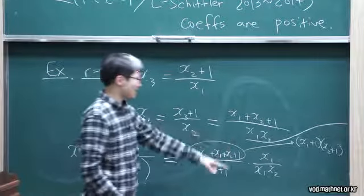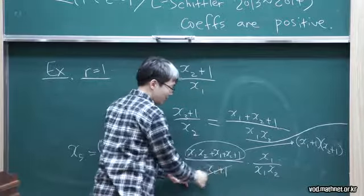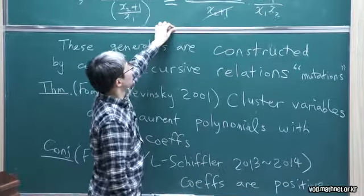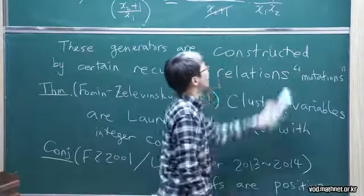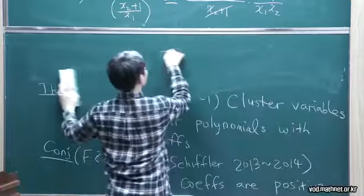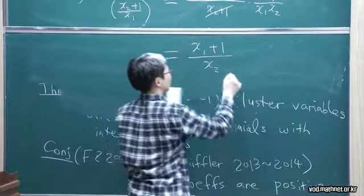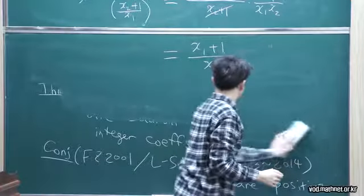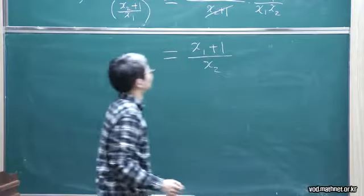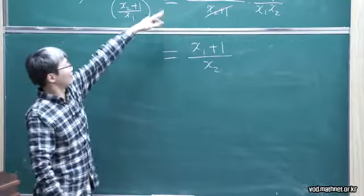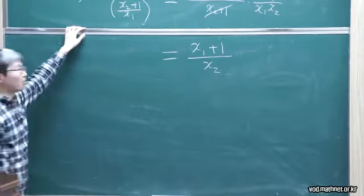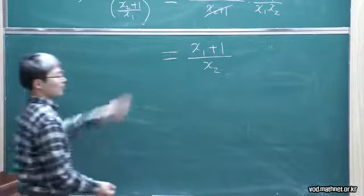And this polynomial becomes factored, and so actually it can be factored like this. And then moreover surprisingly it has a common factor, so there is a cancellation. So once we have such a cancellation, we will get a polynomial, not just a rational function. We will get a Laurent polynomial.